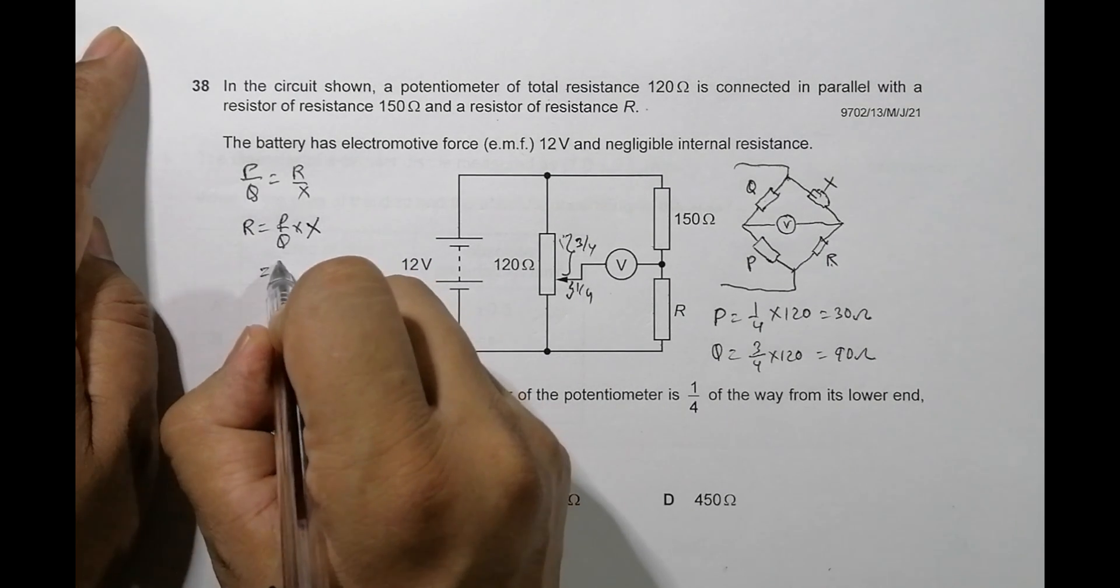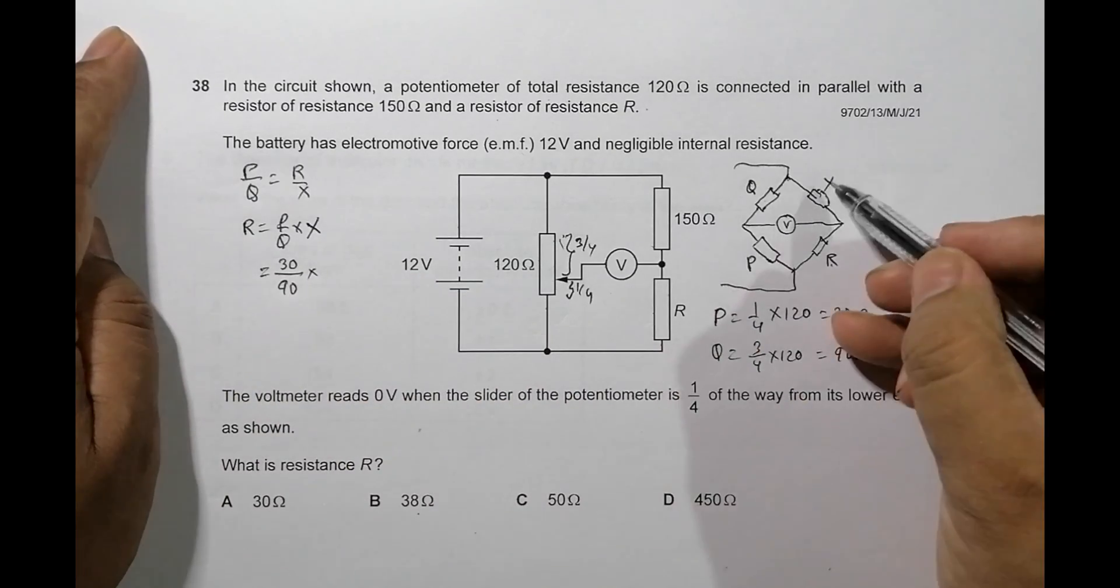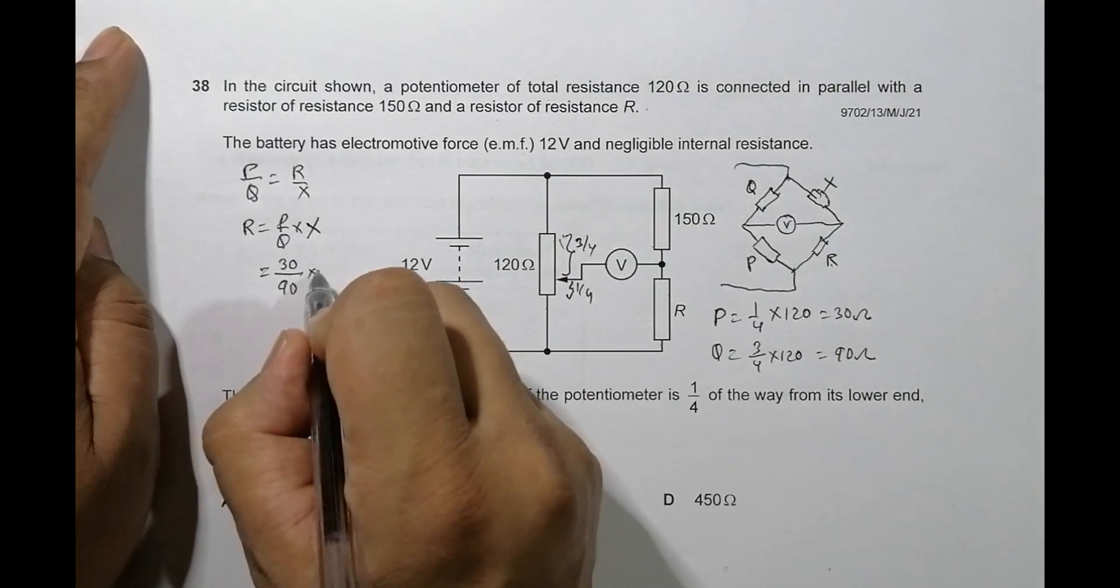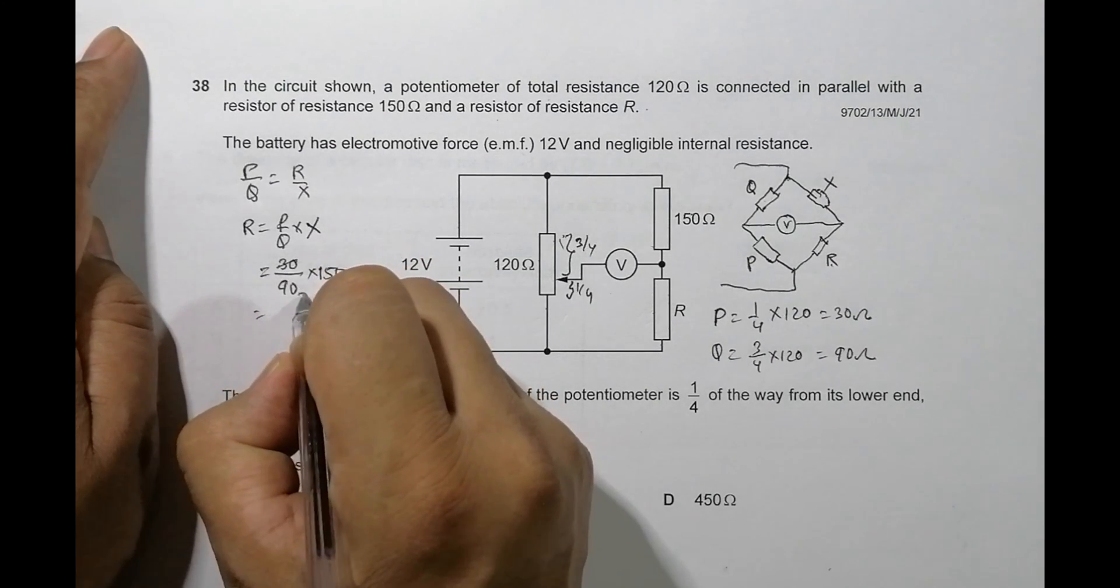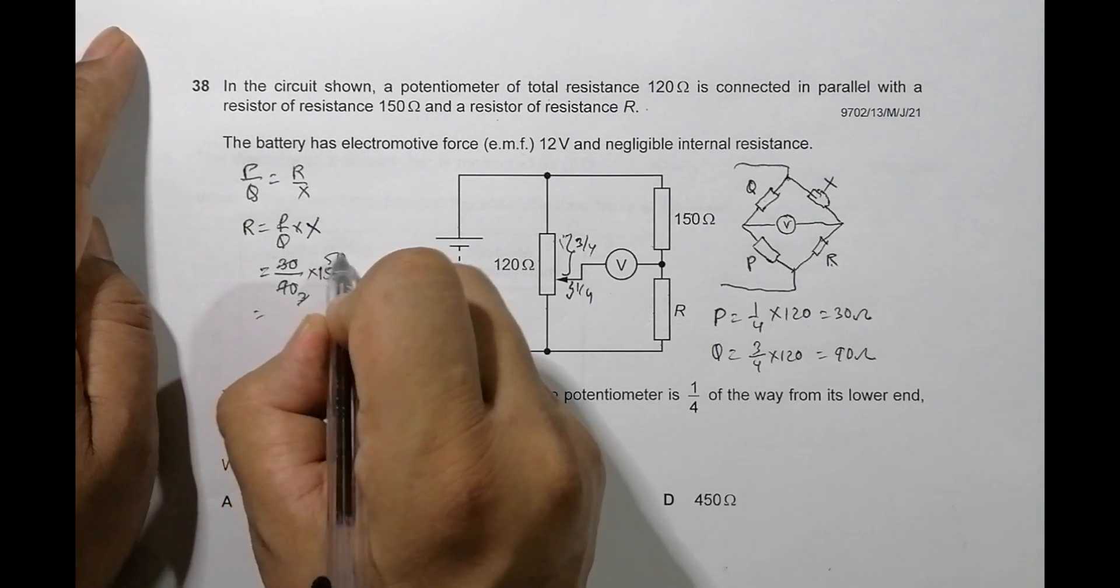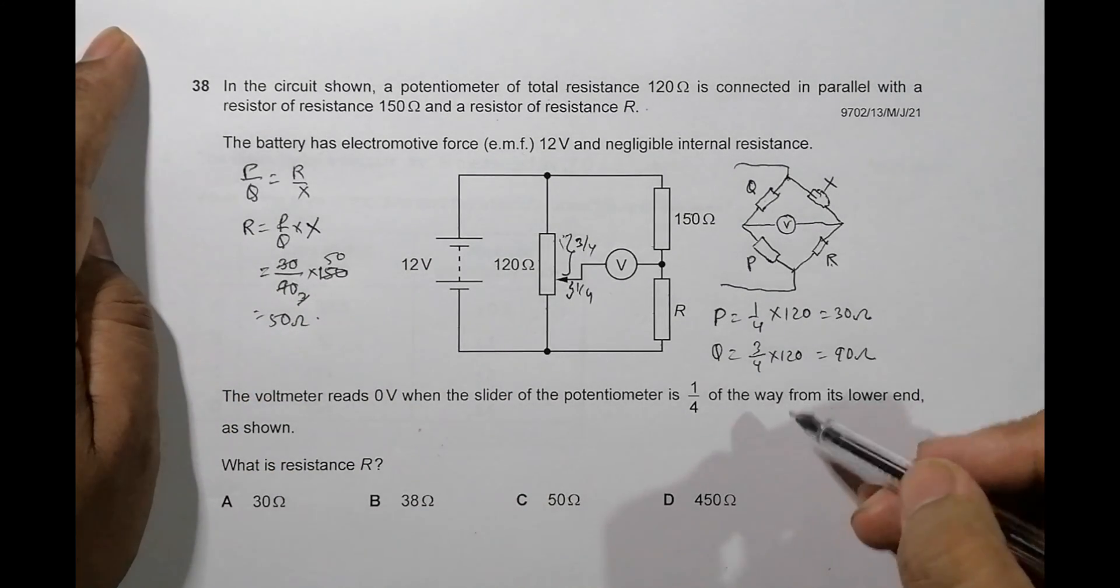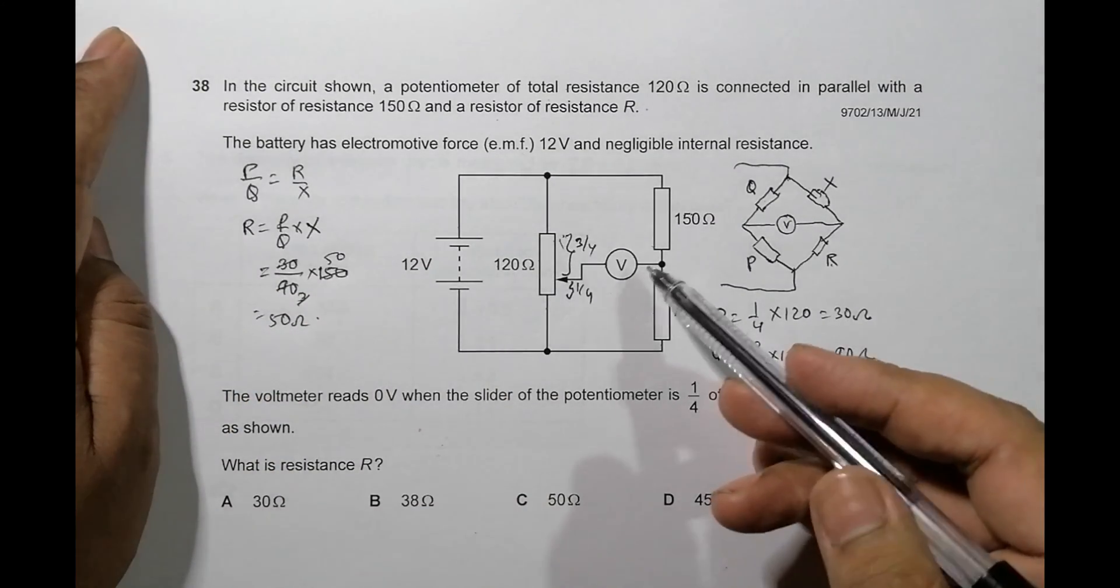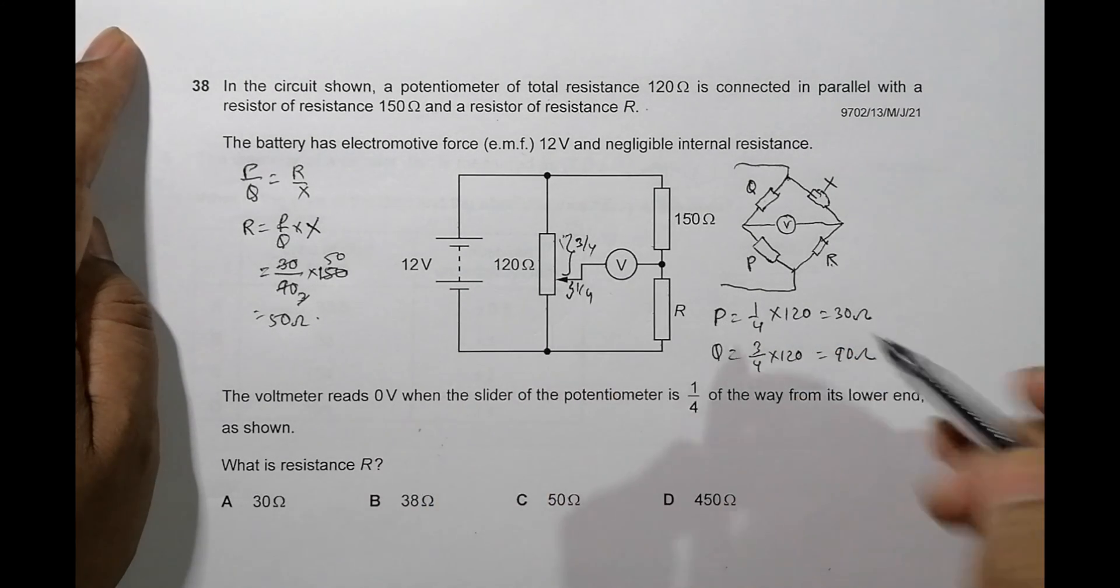So that's why I must have P equal to 30, Q equal to 90, into this X which is equal to 150. So it's equal to 50 ohm. So the resistance R should be 50 ohm so that this thing comes into balance or this V reads 0 volt.